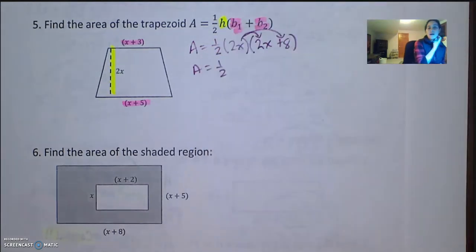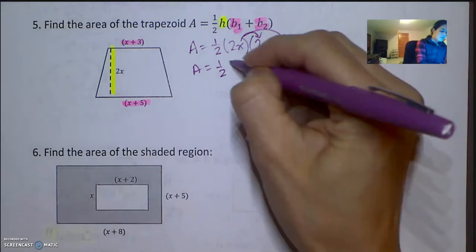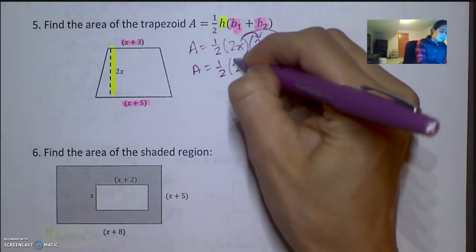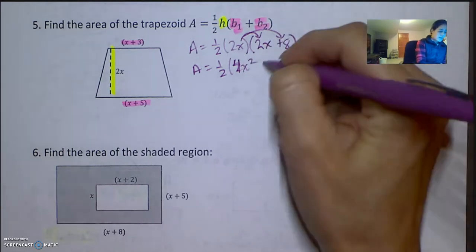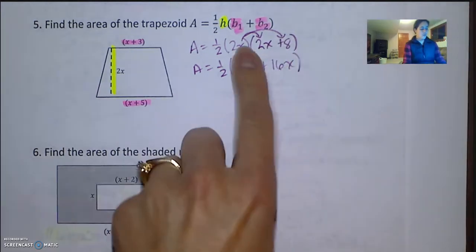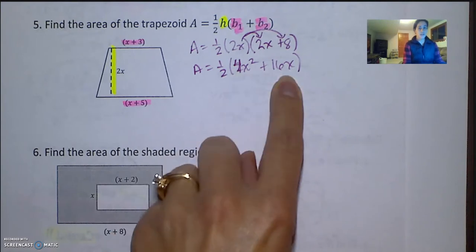Again, wait to do the one half. So, 2x times 2x is 4x squared, and 2x times 8 is plus 16x. So, 4x squared, 16x.